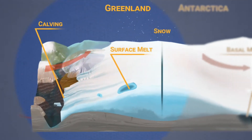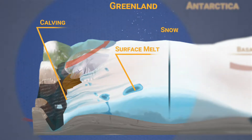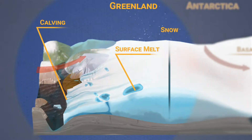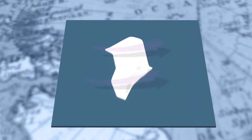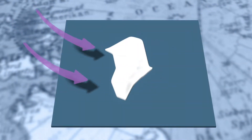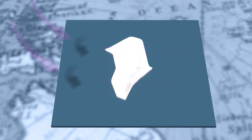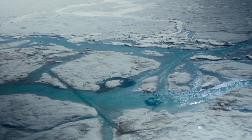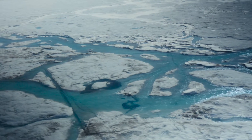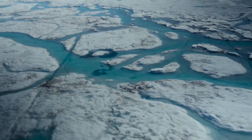Atmospheric currents play a really important role in directing warm bodies of air onto the ice sheet. And as the jet stream moves from the west across the Greenland Ice Sheet, it can add a substantial amount of moisture and warmth to the surface of the ice sheet and cause increased or elevated surface melting.